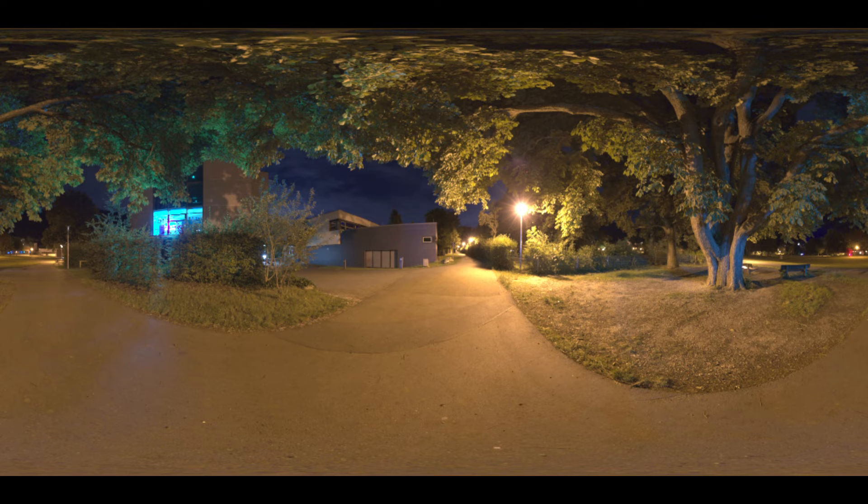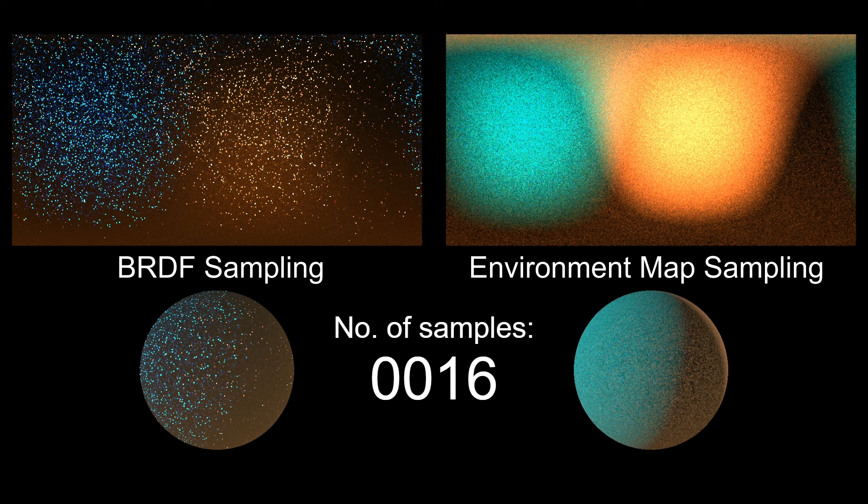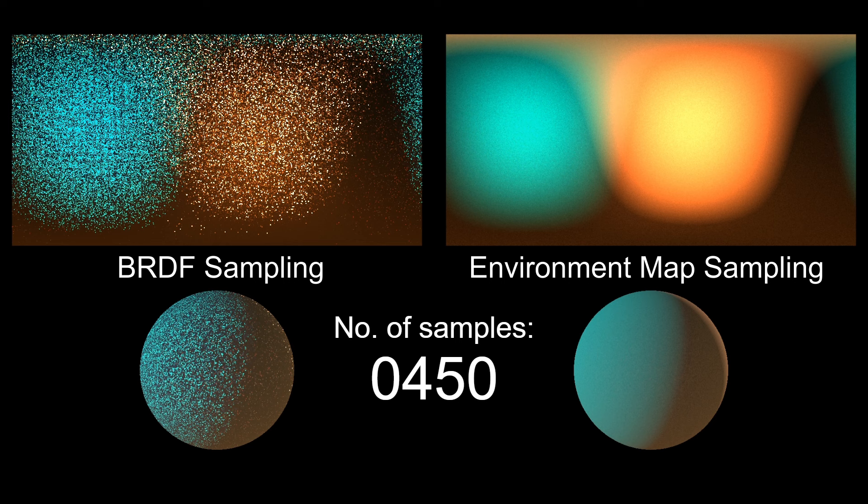In the last three episodes, we have already discussed image-based lighting and applied importance sampling with respect to the BRDF to reduce the sampling noise. However, this is not always the best option, as you can see here. On the left, you see the result of sampling the BRDF and on the right, the result of sampling the environment map.